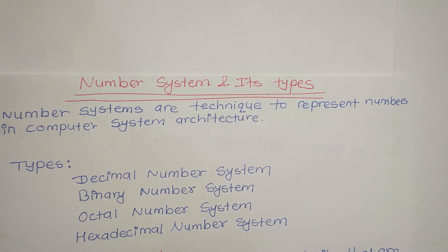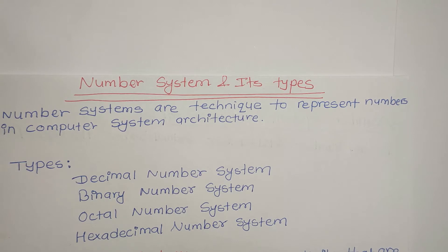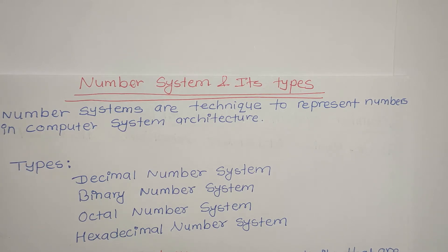This number system covers conversion and different types of calculations in binary and decimal number systems. Binary number system includes addition, subtraction, multiplication, and division. For binary subtraction, we use 1's complement and 2's complement. In case of decimal, 9's complement and 10's complement are used.